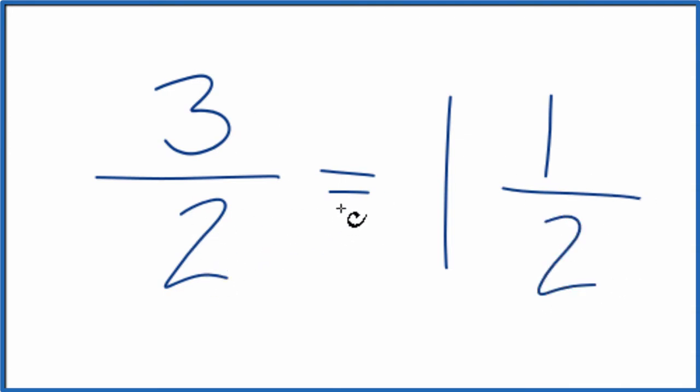So 3 over 2, as a mixed fraction, that's 1 and a half. So I'm not sure we necessarily can say that we've simplified it, but we have changed it from an improper fraction to a mixed fraction.